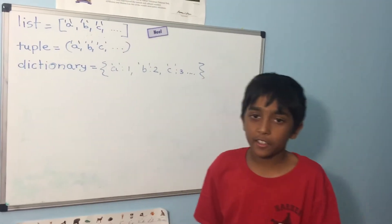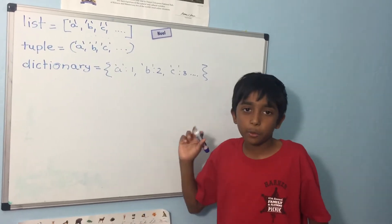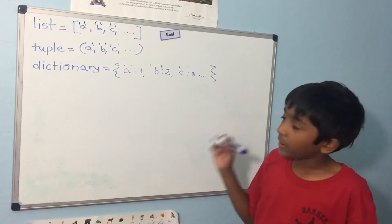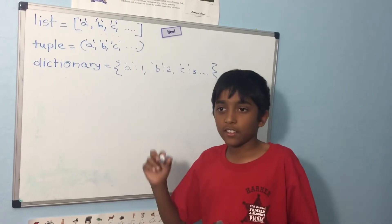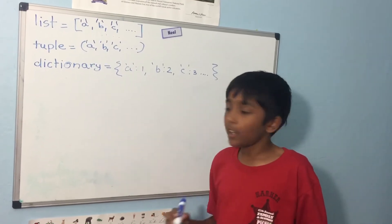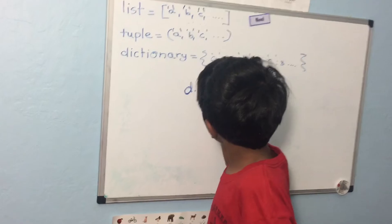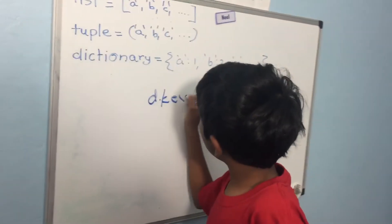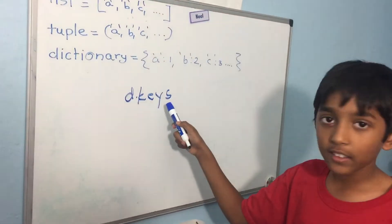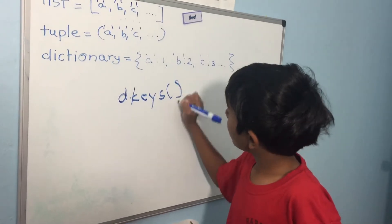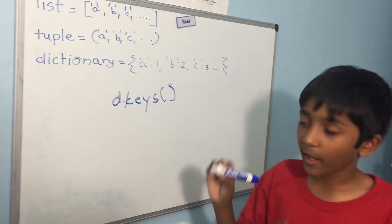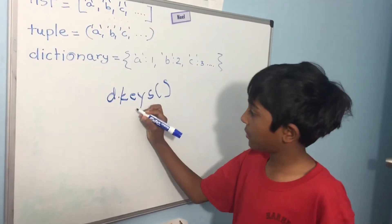A dictionary though stores key value pairs and what you have to do to get them is you have to do the dictionary name and then keys if you want the keys. If you want the values though you replace keys with values.